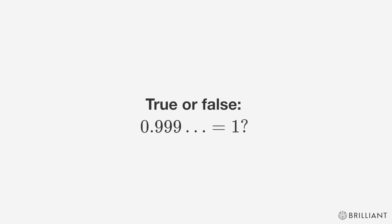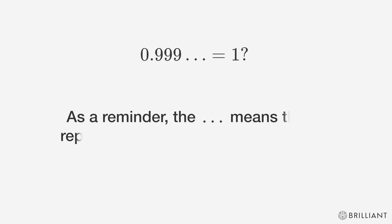True or false? 0.999 repeating equals 1. As a reminder, the ellipsis means the nines repeat infinitely. They never terminate.